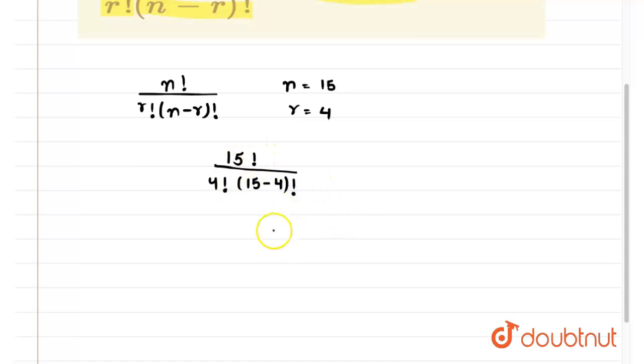So if we further solve this, we will get 15 factorial upon 4 factorial into 11 factorial.